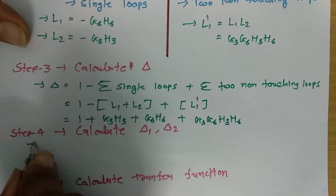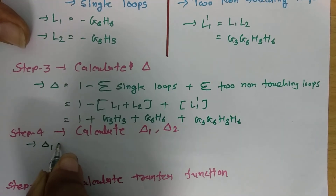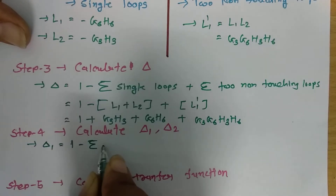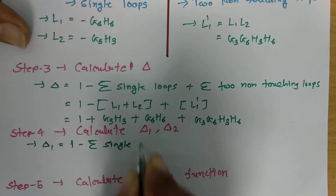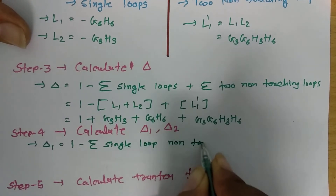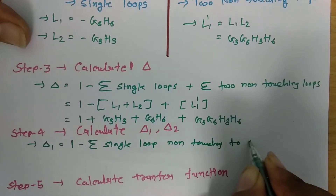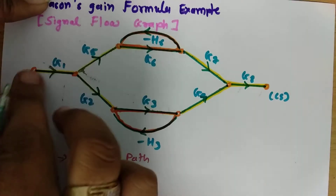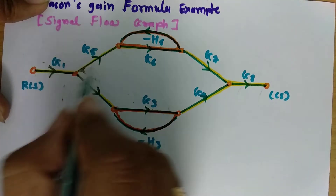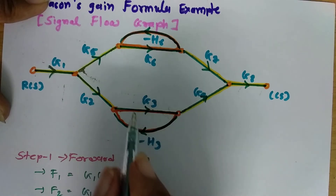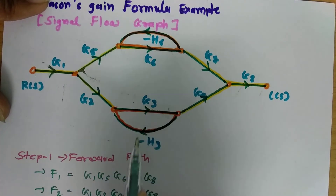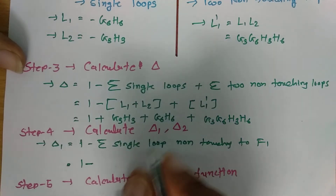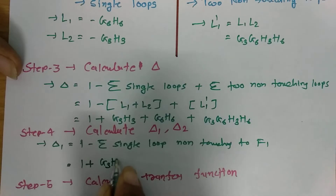Next we calculate Δ1, which is 1 minus the sum of single loops not touching forward path F1. Looking at F1, the loop L2 = −G3·H3 is not touching it, while L1 is touching it. Therefore Δ1 = 1 − (−G3·H3) = 1 + G3·H3.